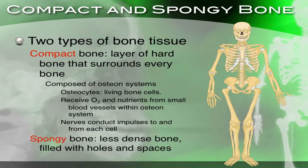We also have spongy bone, which is less dense because it's filled with holes and spaces, and we find that on the inside. So the outer layer is the compact bone, and then we have spongy bone on the inside, which is less dense — kind of like a sponge, with holes that make it a little softer.